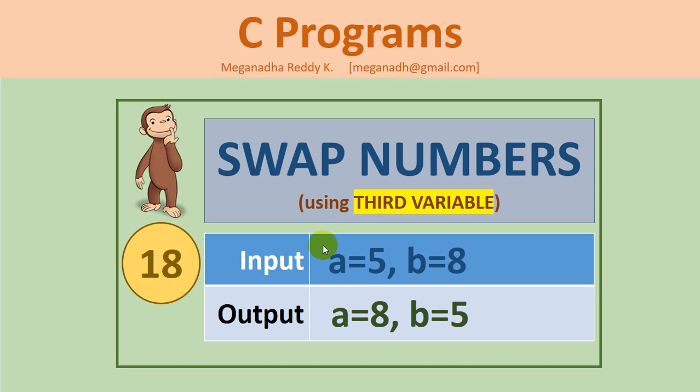Hi, this is Megnath. In this video we're going to learn C program to swap variables data of a and b. Let's take for example initially we have assigned value of a for 5 and value of b with 8.